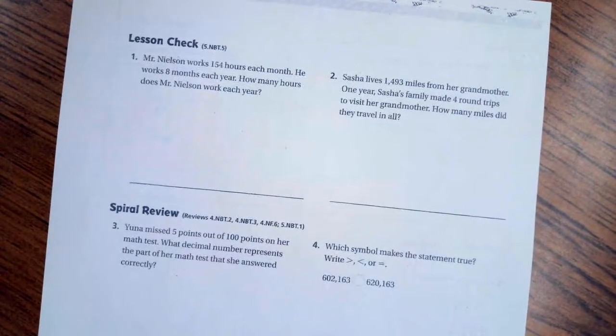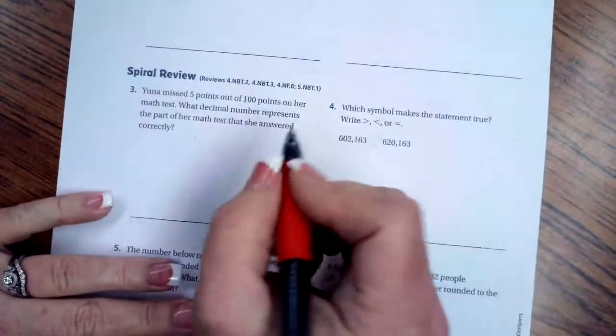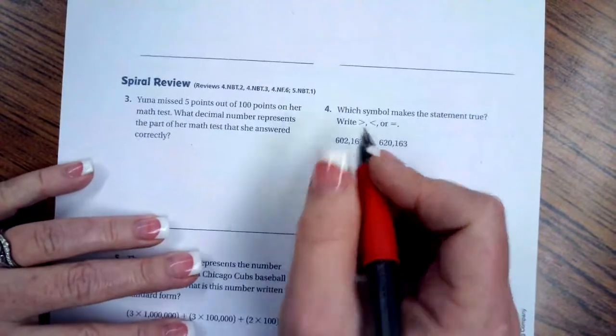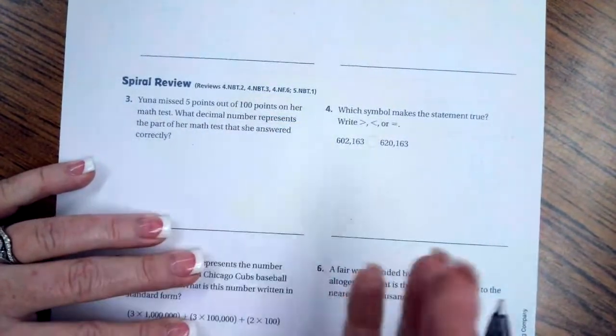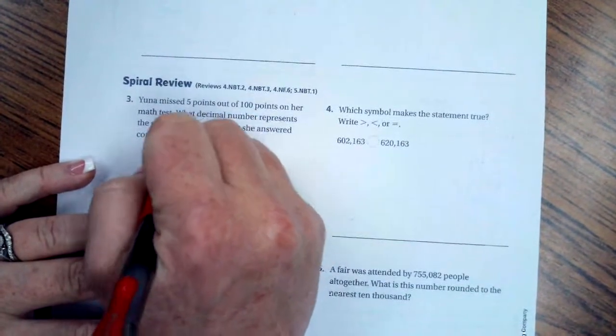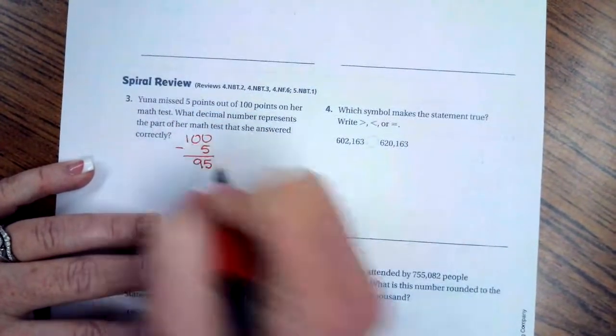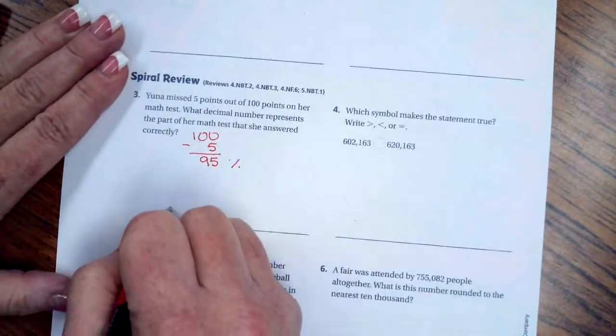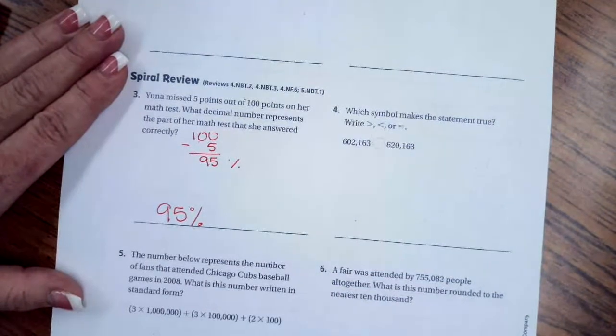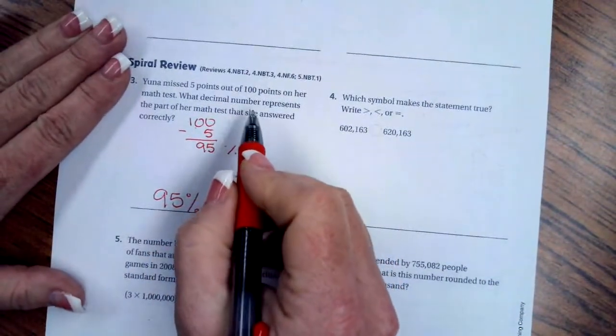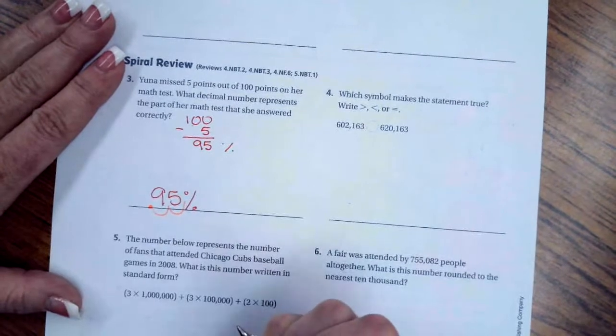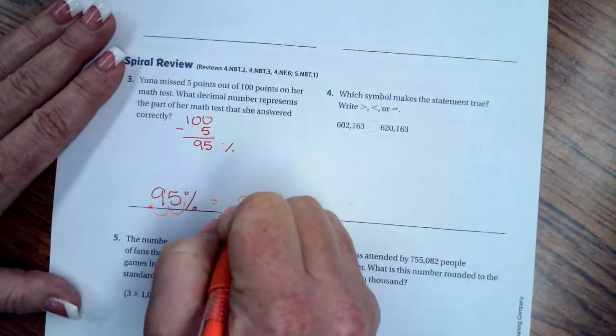We're going to go over onto the back where you're going to do the lesson check just like always, and then we're going to go down and do the spiral review. It says Yuni missed five points out of a hundred points on her math test. What decimal represents the part of her math test that she answered correctly? Well the cool thing is that a hundred points means a hundred percent. So if I were to take those five points off, she would still have ninety-five points. This translates directly to percent, so ninety-five percent. Now ninety-five percent as a decimal - from a percent we move that decimal two times to the left - that is 0.95.